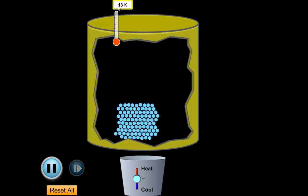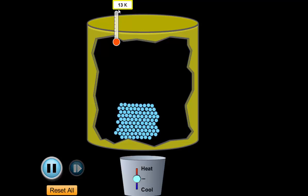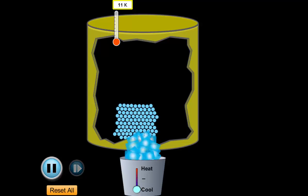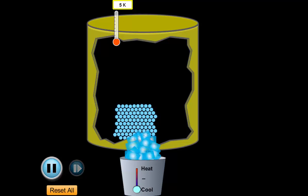My thermometer up here is measuring the temperature in Kelvin. Remember, Kelvin is the absolute scale — zero Kelvin is as cold as possible. If I go to zero Kelvin, that means the particles are stopped. Since temperature measures the average kinetic energy of individual particles, if a particle is stopped, it can't lose any more kinetic energy, so it is at absolute zero. We can't get any colder than that.